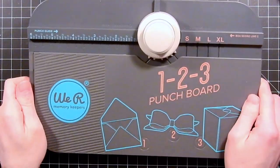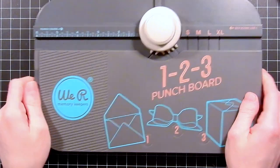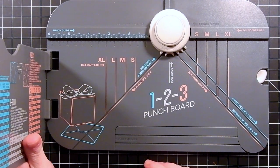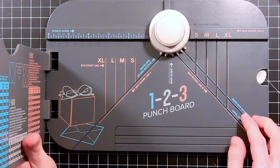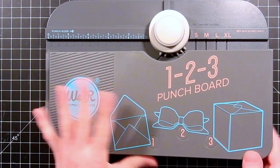To create our box we're going to be using the 1-2-3 punch board. This has all sorts of really neat ways for you to be able to create a variety of boxes, bows, and envelopes to use in your projects.